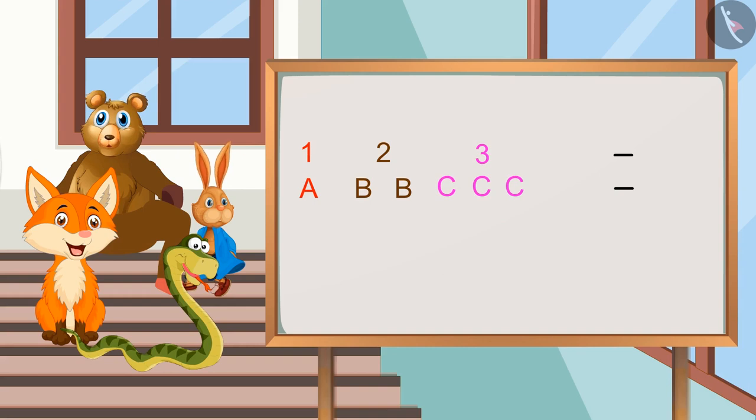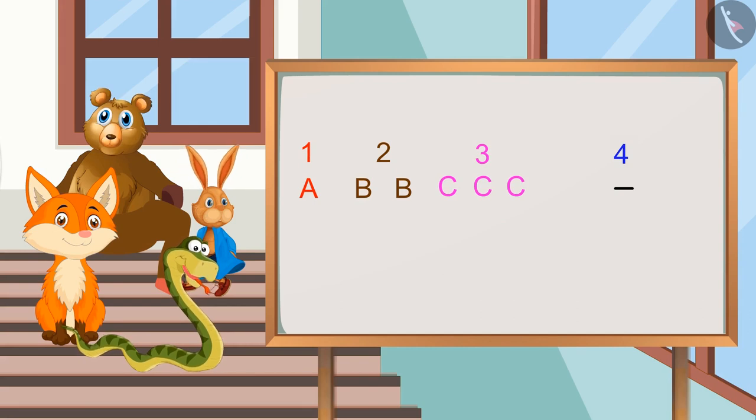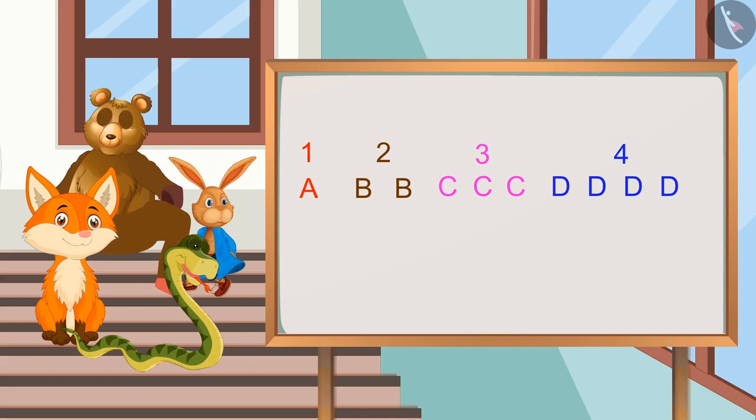In the first blank we will write C for three times, right? Then we have number four and we will write D for four times. Right answer. Yes, you have made a very nice pattern. Thank you.